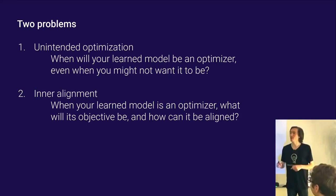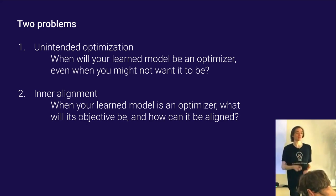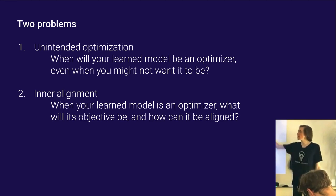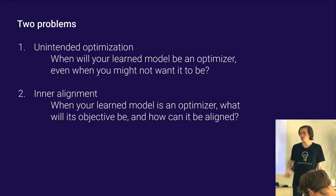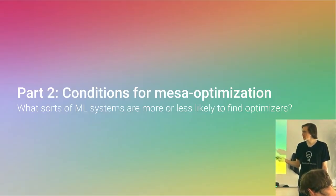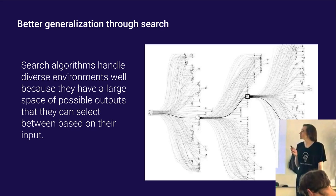We have two questions: one is unintended optimization — maybe you didn't want the model to be an optimizer, you just wanted it to be a selection of heuristics. Why might you get optimization anyway? The second question is the inner alignment question: if it is an optimizer, how do you get it to optimize for what you want? What sorts of machine learning systems are more or less likely to find optimizers?